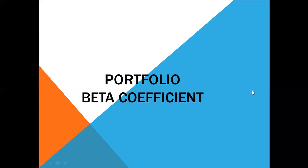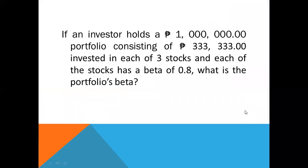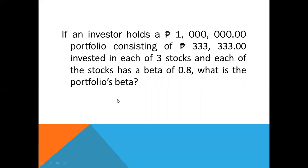For example, if an investor holds a 1 million peso portfolio consisting of 333,333 pesos invested in each of three stocks, and each of the stocks has a beta of 0.8, what is the portfolio's beta?